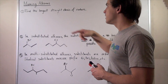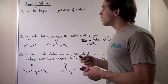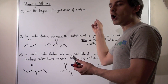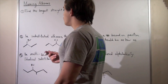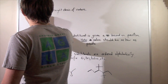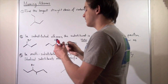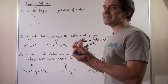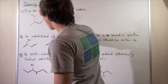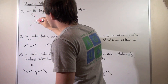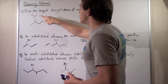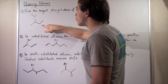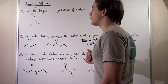To demonstrate this rule, let's look at a few examples. Let's create an alkane and try to find the longest straight chain of carbons on it. So let's suppose we have an alkane. We want to find the longest straight chain of carbons, so let's begin counting. One carbon, two, three. Since we want the longest straight chain, we have to choose which direction to go.